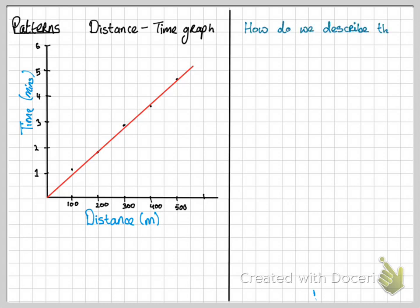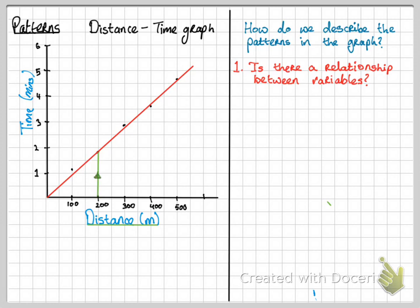So how do we describe the patterns in this graph? First of all, is there a relationship between the variables? If we start at distance and we're going to go at 200 meters, if we go up from 200 meters to the line of best fit and across, we will notice that the time is about 1.8 minutes. However, if we go to now 500 meters, so we increase the distance, we also see that the time has increased.